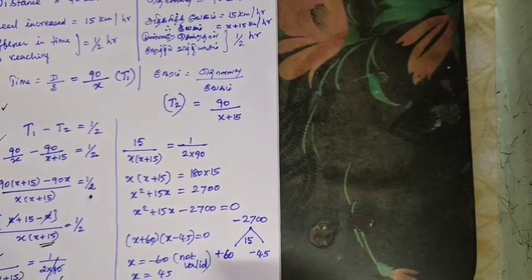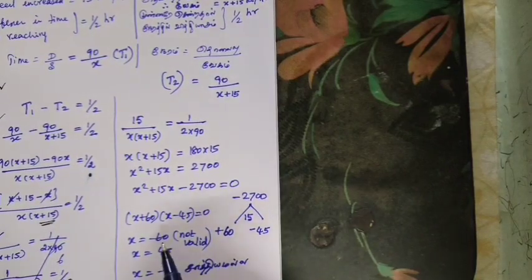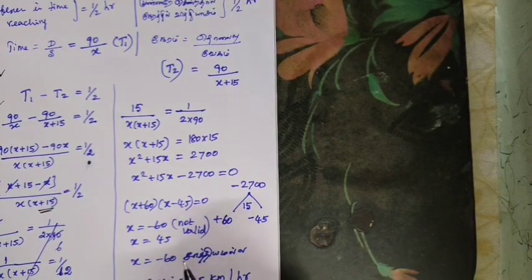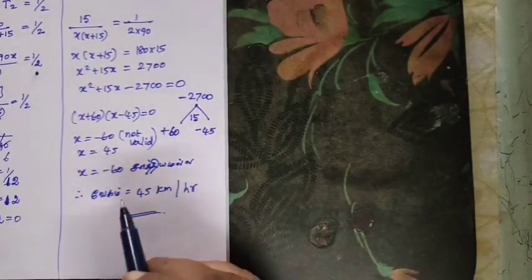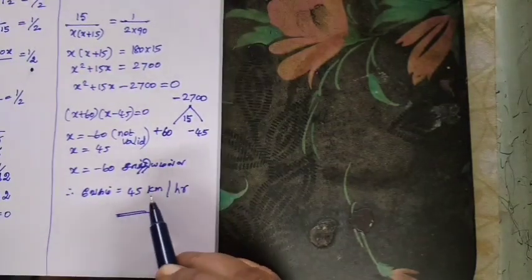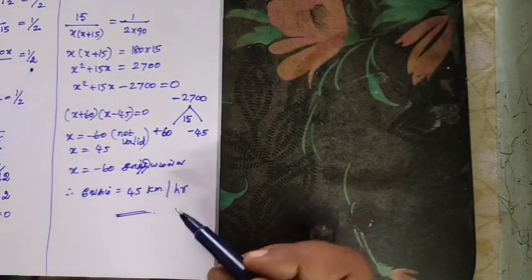This is very important — minus will come to the answer and plus will come to the answer. Therefore, the answer is 45 km per hour.